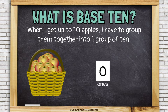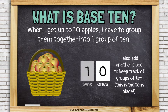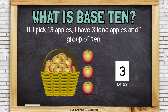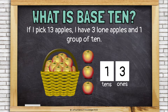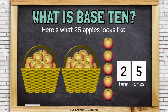This is the ones place. To keep track of my groups of 10, I need another place called the tens place. If I pick 13 apples, I have three lone apples, or three ones, and one group of 10 apples. Here's what 25 apples looks like. I have five ones and two tens.